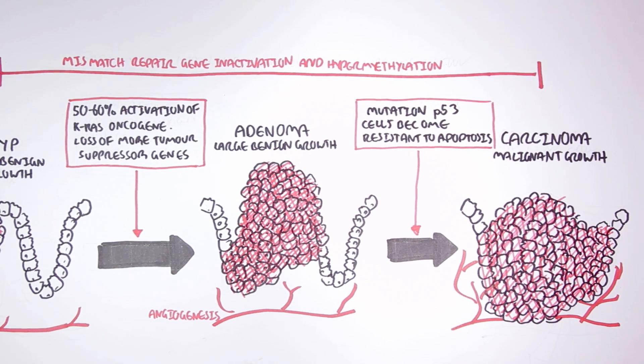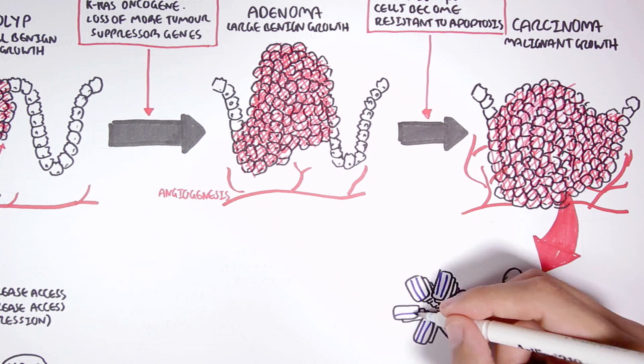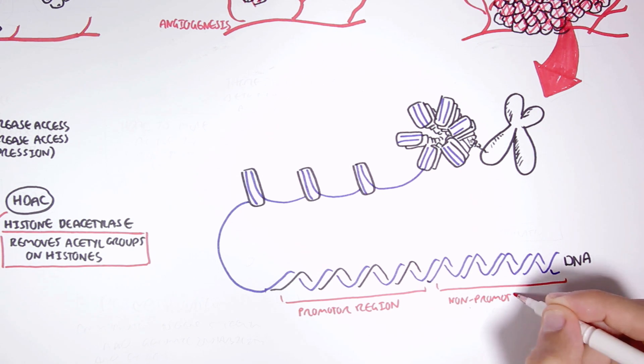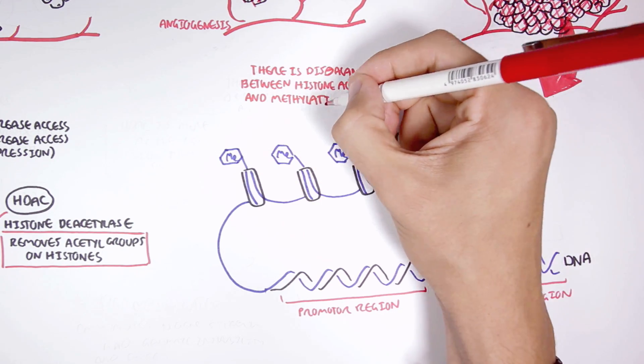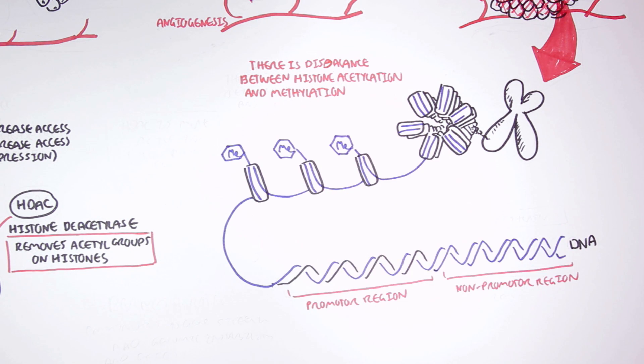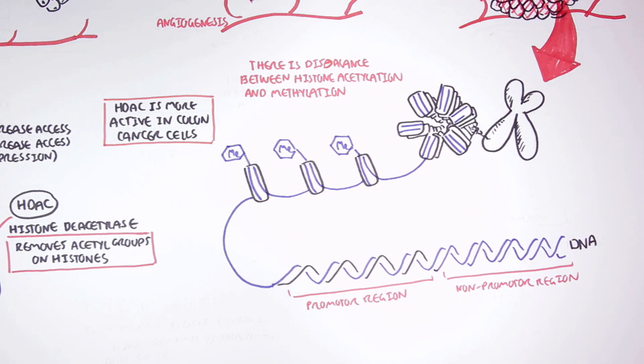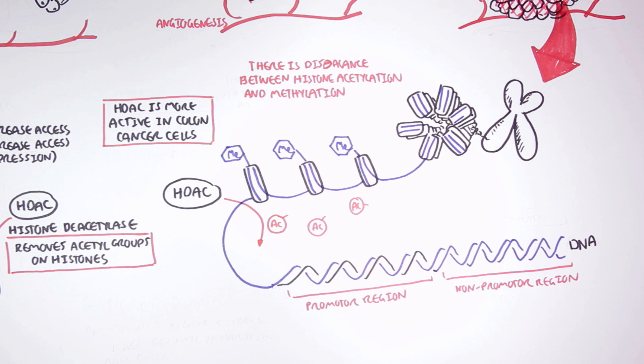Now that we're at this stage, let us look at the genetic material of this cancer cell. So here we have the chromosome again, the histone fibers and the histone, and then the DNA, which has, remember, the promoter and non-promoter regions. In cancer cells, there is a disbalance between histone acetylation and histone methylation. We see more methylated histones. Remember, methylation decreases access to transcription factors. One reason why we see more methylation is because of HDAC, the enzyme, which appears to be more active in colon cancer cells. So here, HDAC is removing all the acetyl groups on histones, resulting in more methylated histones.